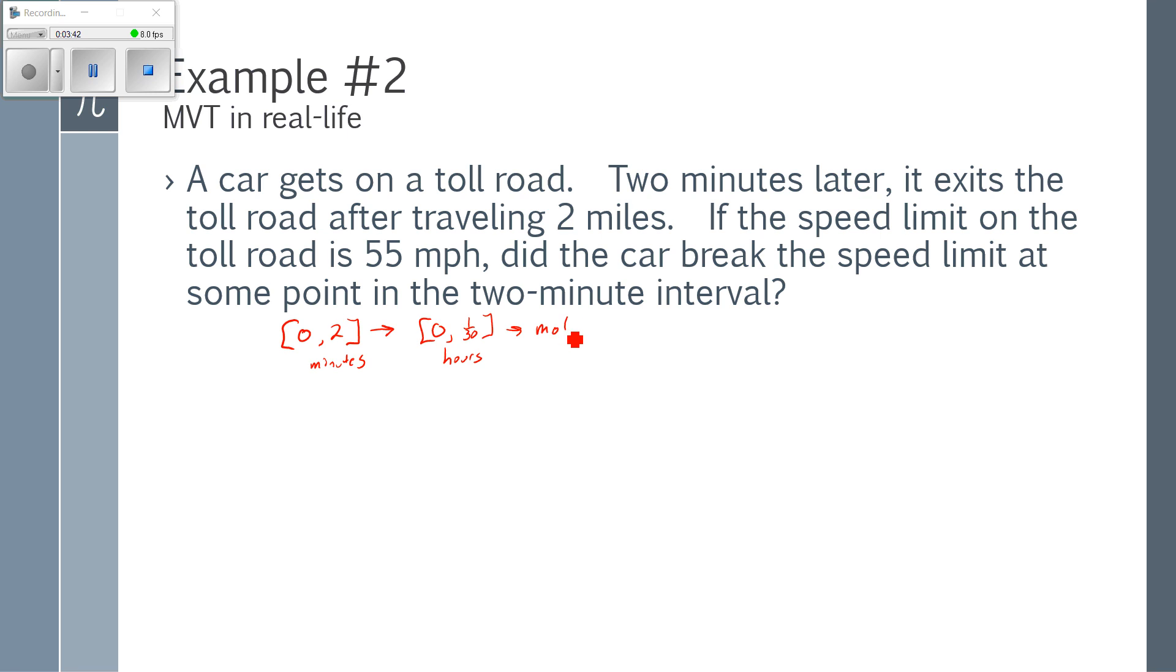I can say the motion is continuous on that interval of zero to one-thirtieth and differentiable on the open interval of zero to one-thirtieth. That's because the continuity part is the displacement. And the differentiability part would be the derivative of that, which is velocity. And we know those both have to exist. We can't have displacement or velocity suddenly jump around. It's going to be both continuous and differentiable.